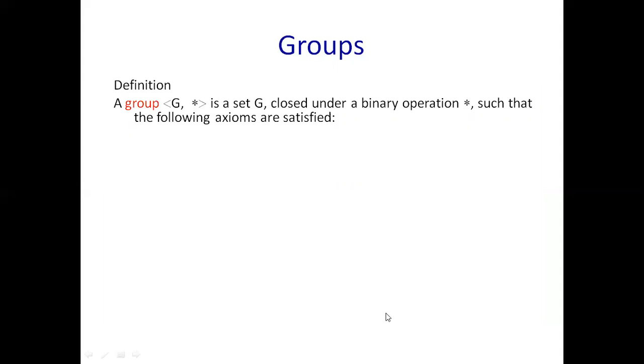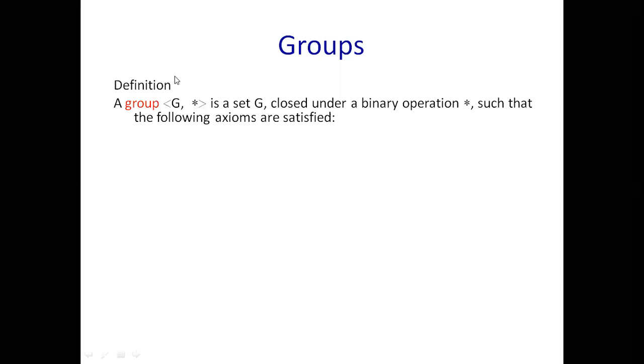We denote a group by G. This group G is defined with respect to an operation, this star symbol. So a group (G, *) is a set G that is closed under a binary operation * such that the following axioms are satisfied.